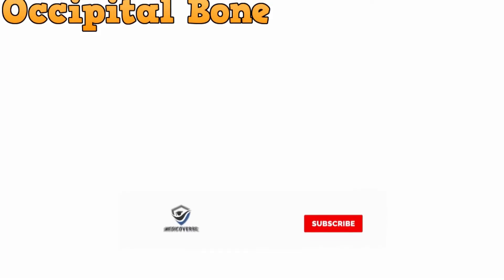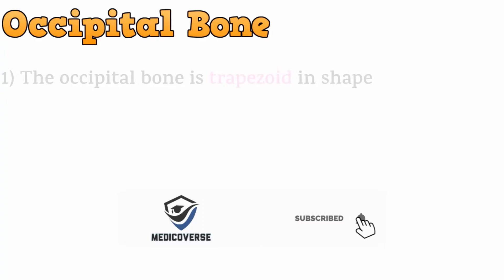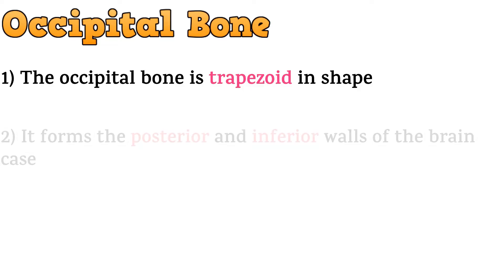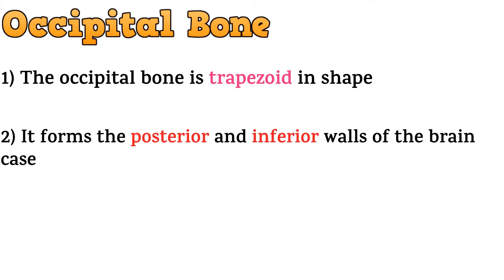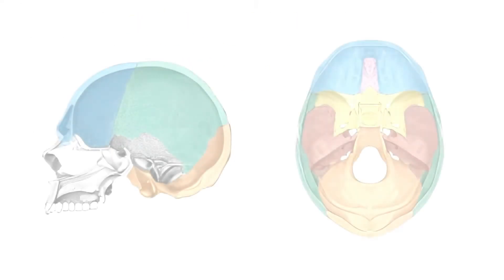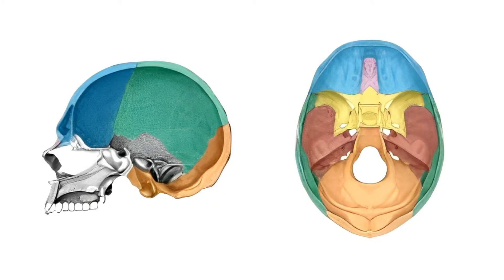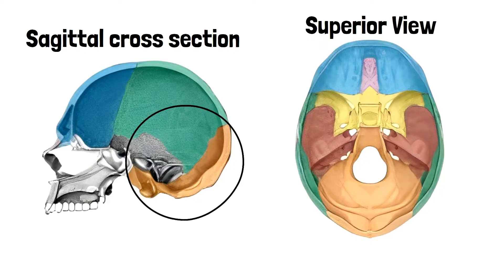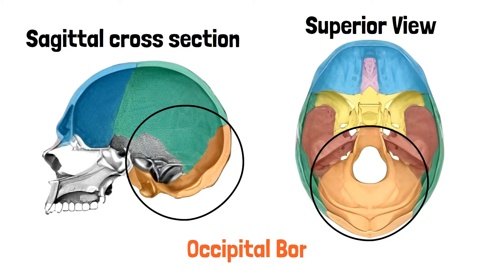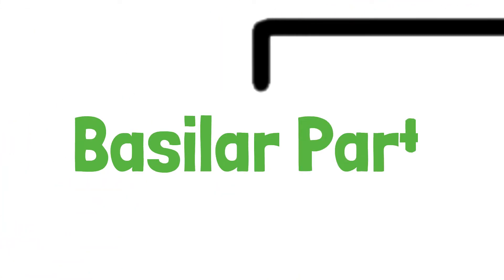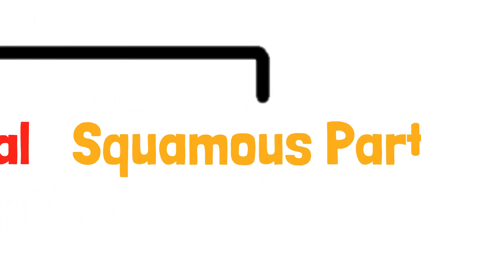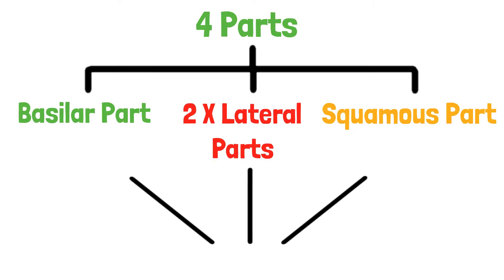Starting with the general information about the bone. The occipital bone is trapezoid in shape. It forms the posterior and inferior walls of the brain case. The bone can be divided into 4 parts: the basilar part, two lateral parts, and the squamous part. All these parts contribute to form the foramen magnum.